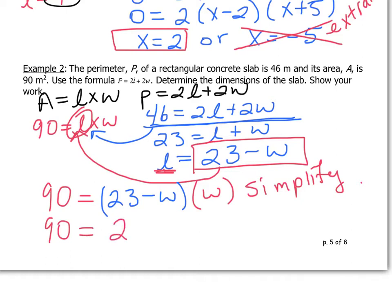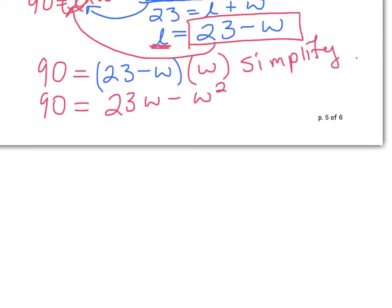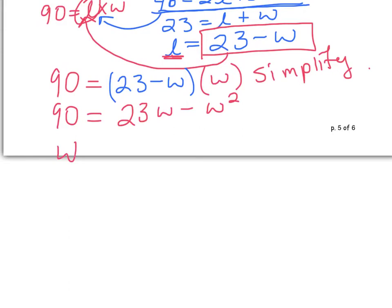So we got 23w minus w squared. And you can see here that we've got a quadratic. And move everything over to one side, make it equal to zero. So I'm going to move everything over to the left side so that I get a positive coefficient for my w squared. So I've got w squared minus 23w plus 90 equals zero.